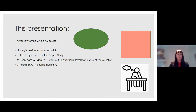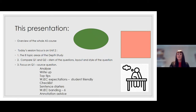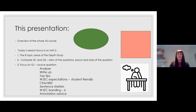Today's session is going to focus primarily on Unit Two. There are eight topic areas of the depth study in Unit Two. I'm going to compare Question One and Question Two, looking at the stems of the questions, the layout and styling. Then I'm going to focus on Question One, the source question — how to analyse the source, how to write it up. I'll give you top tips, WJC expectations in student-friendly language, a checklist, possible sentence starters, WJC banding at level six, and annotation advice.